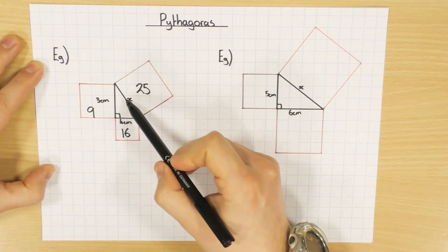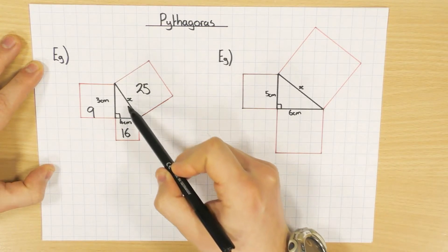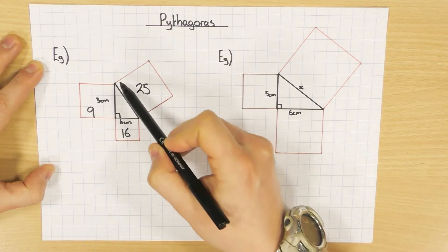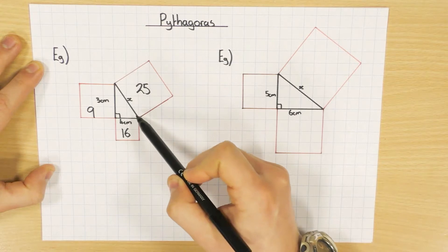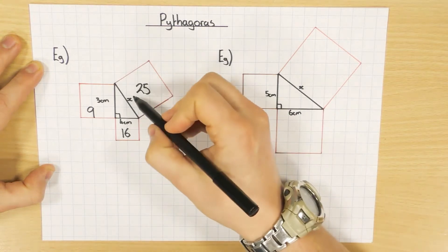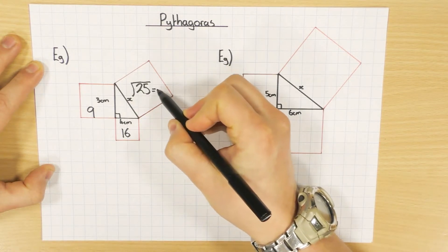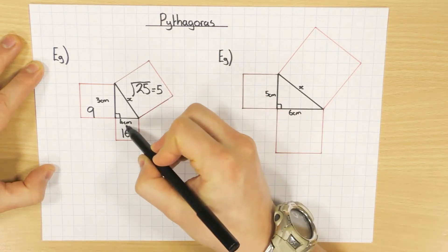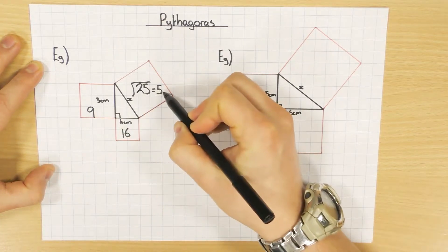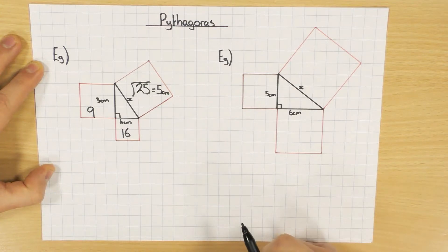To work out this missing length, which I've called x — the area of the square is 25. To work out the length of the square, all you do is square root that, which gives you the answer of 5. And because that's in centimetres, it's 5 centimetres. So that's one way to look at it.